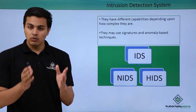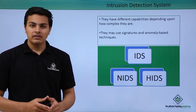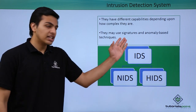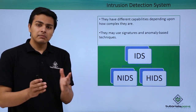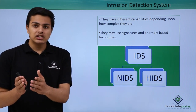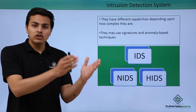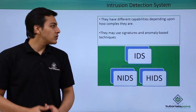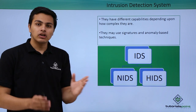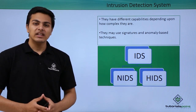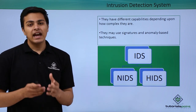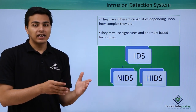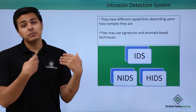Depending upon their capabilities and complexity, IDS/IPS systems use different techniques to scan for intruder activities on our network. Some techniques include signature-based detection, where they match the signature of malicious packets with known ones, and some use anomaly-based techniques to detect intruder activity. Intrusion detection systems are of different types depending upon which platform we want to deploy them on.